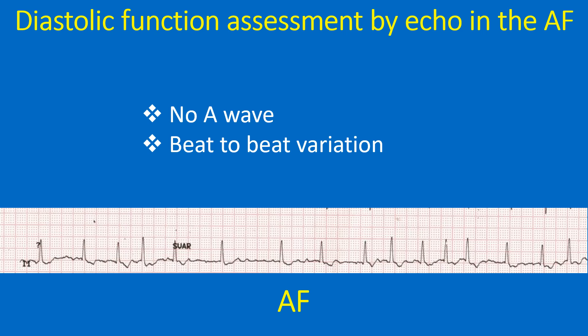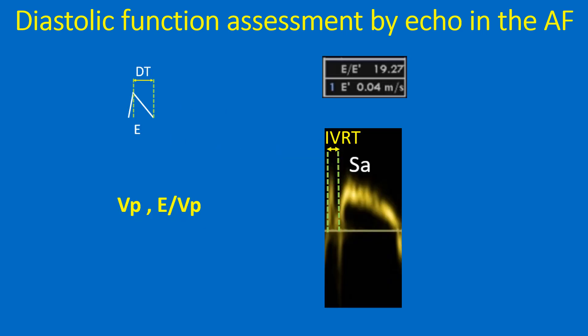Moreover, the variation in cardiac cycle length in atrial fibrillation causes beat-to-beat changes in ventricular relaxation. Echo parameters useful in the presence of AF include mitral E wave DT and E by E prime, color M-mode derived Vp (early diastolic flow propagation velocity) and E by Vp, peak pulmonary vein diastolic flow velocity, pulmonary vein diastolic wave DT, peak acceleration of the mitral E wave, IVRT, and the ratio of IVRT to the time between E and E prime waves.